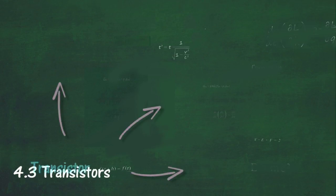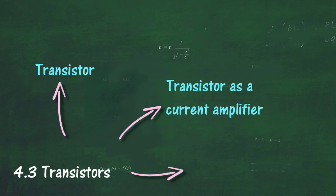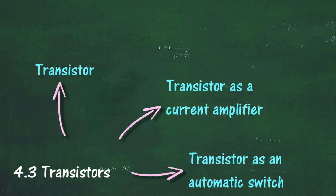Describe a transistor in terms of its terminals, describe how a transistor can be used as a current amplifier, and describe how a transistor can be used as an automatic switch.